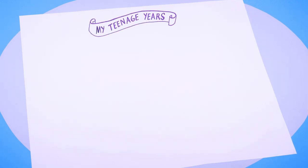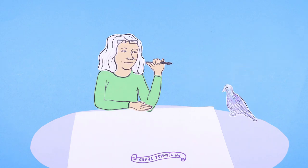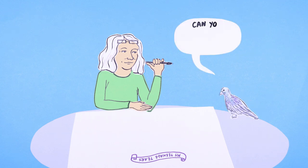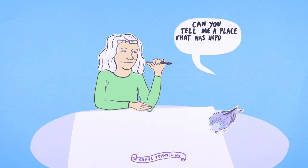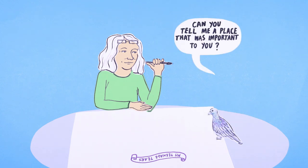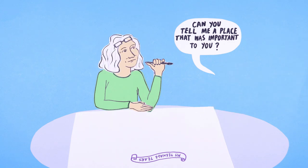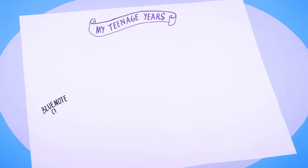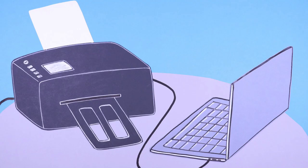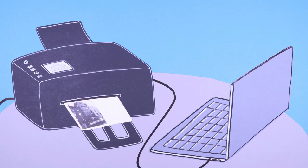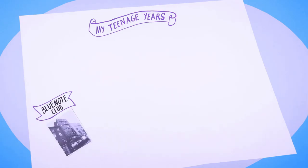Start your map with a title. You can use the title banners, decorative motifs and illustrations on our website, or create your own. Think back to the time or theme you are mapping and think of an important place or journey — write it on the map. Stick on any pictures or add your own drawings. Don't worry what they look like, this isn't a drawing competition.